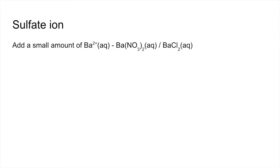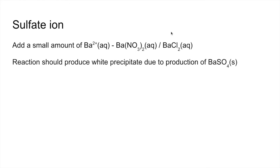For the sulfate ion, you add a small amount of aqueous barium 2+ ions. I would use barium nitrate solution — you can use barium chloride solution, as long as barium ions are present it's going to work — but I would use barium nitrate because it's not going to contaminate the sample with chloride ions. The reaction should produce a white precipitate due to the production of barium sulfate, and there's the ionic equation for that.